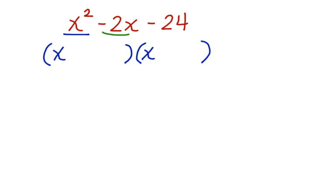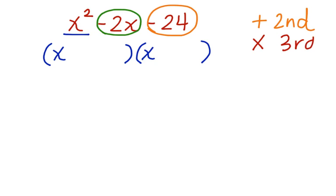Now the second and the third terms are tricky. I have a negative 2x and I have a negative 24. We want two terms or two values that add together to give us the second term, but that multiply together to give us the third.